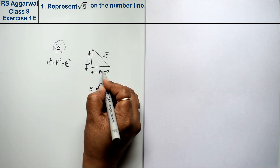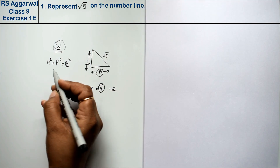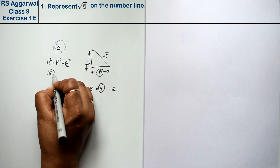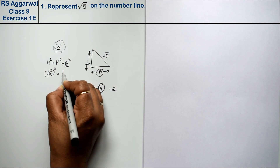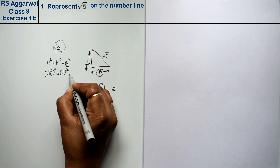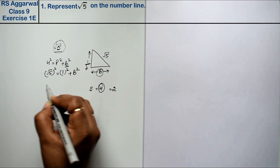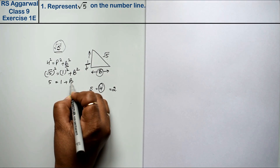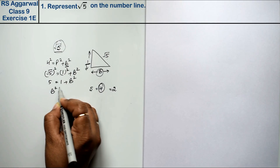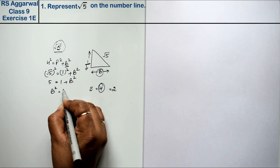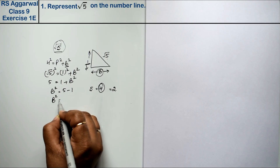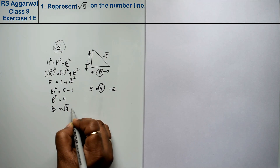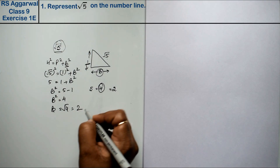This is the reverse method. We take root 5: root 5 squared equals perpendicular 1 squared plus b squared. That means 5 minus 1, so b squared equals 4, and therefore b equals square root of 4, which is 2.